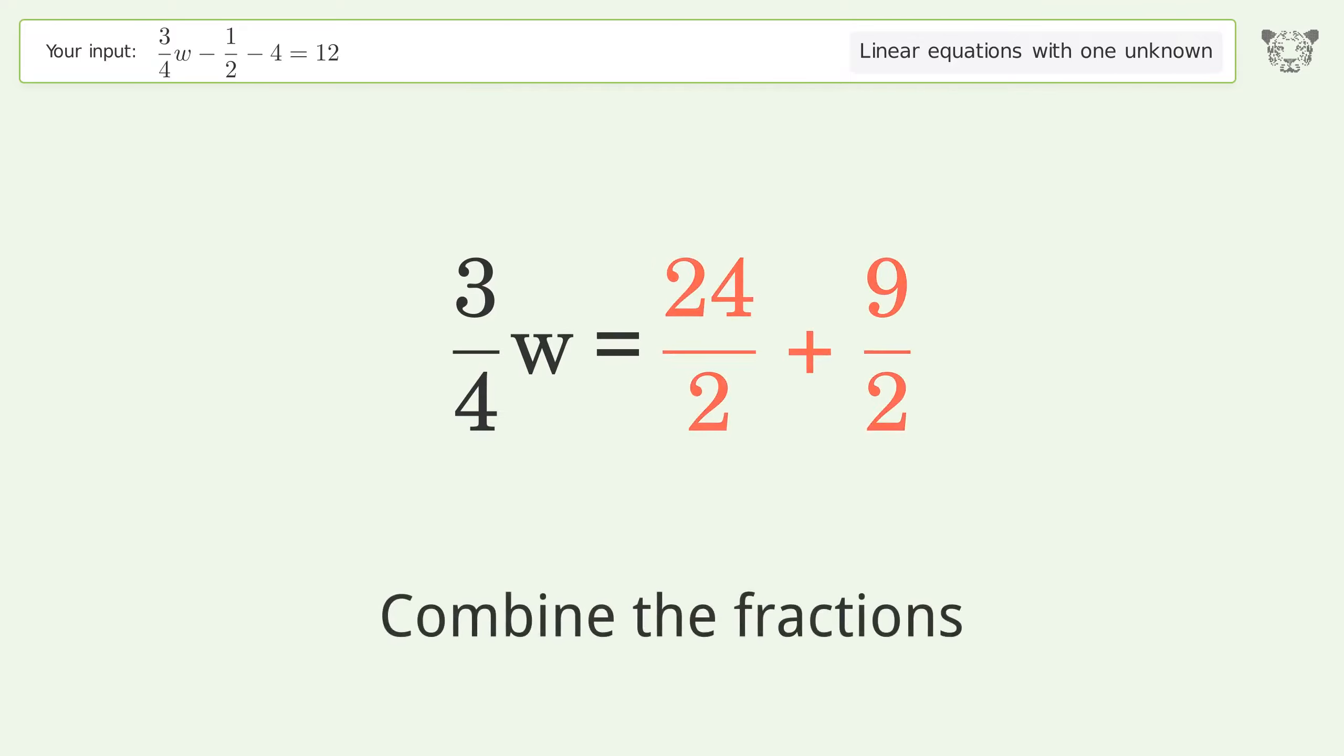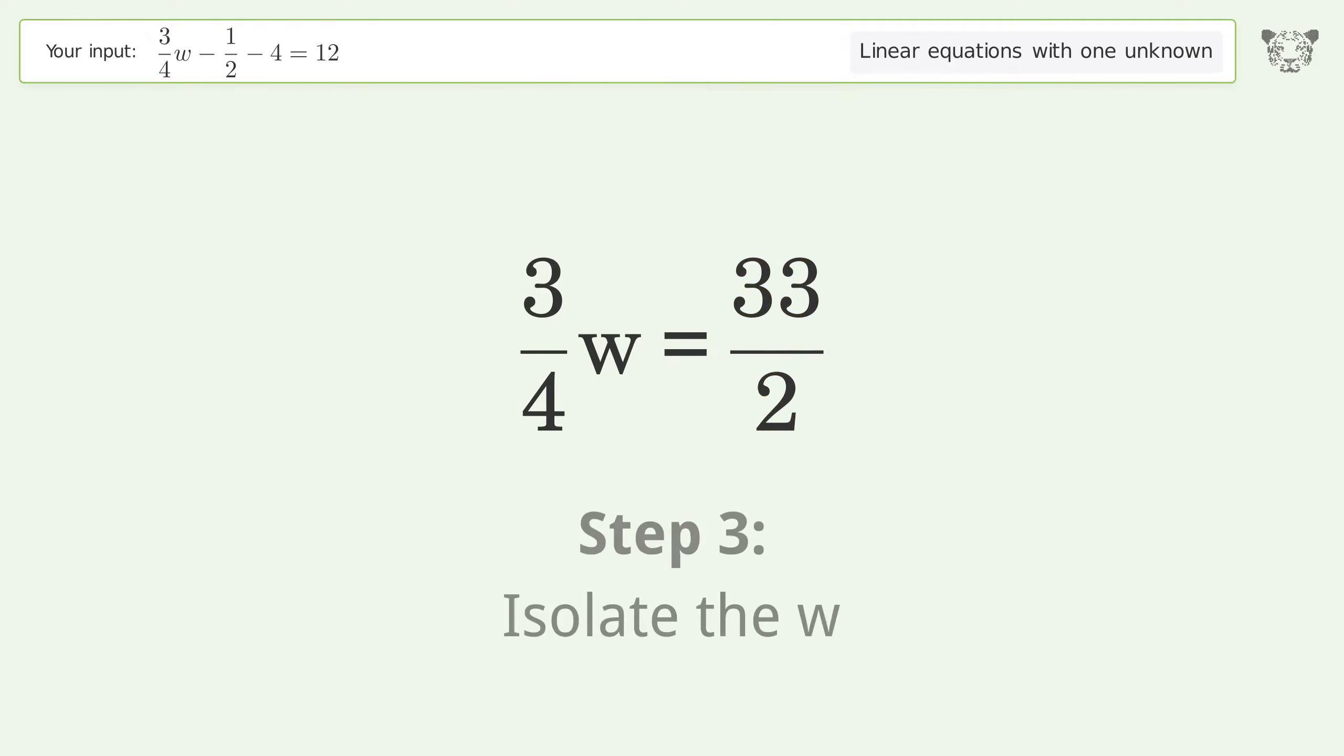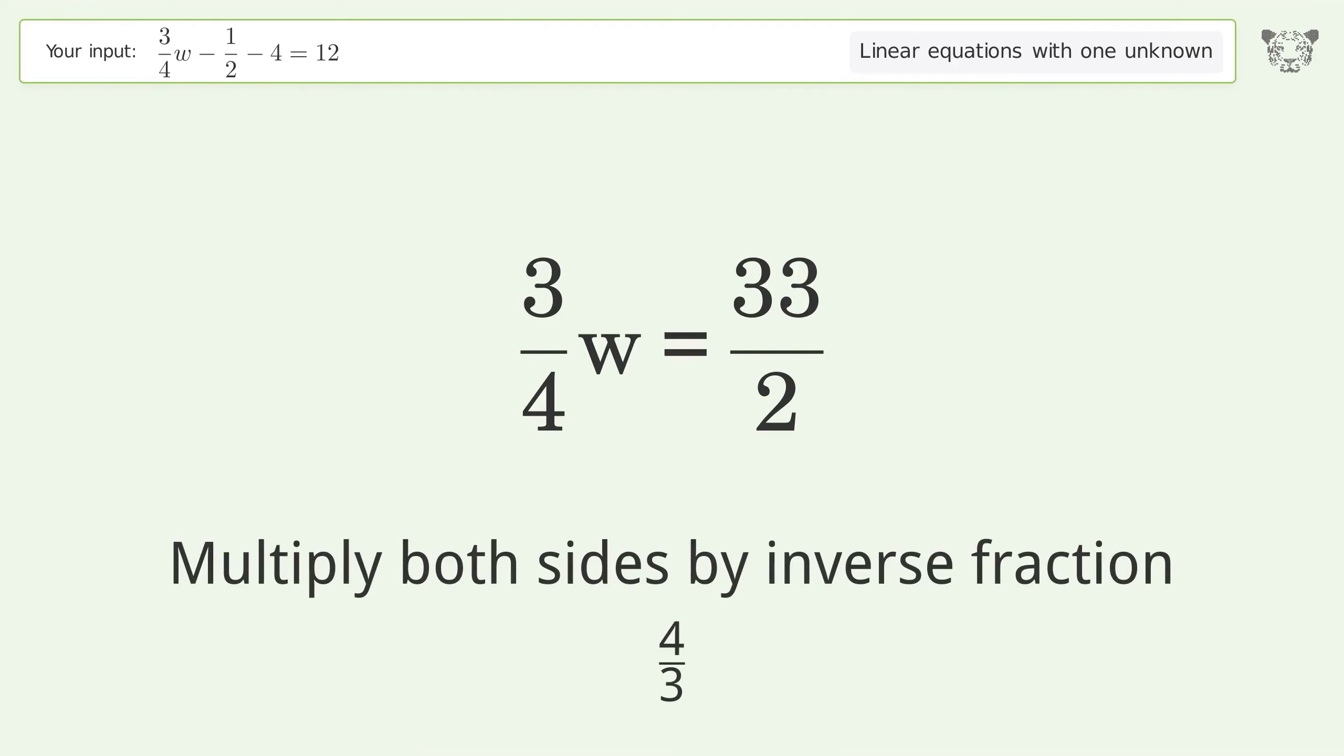Combine the fractions, combine the numerators. Isolate the w, multiply both sides by inverse fraction 4 over 3.